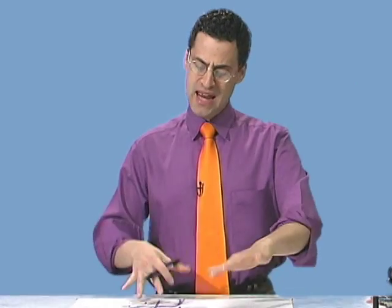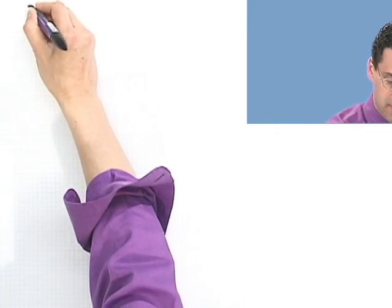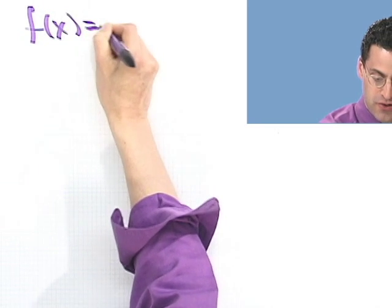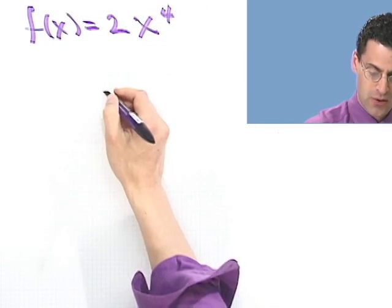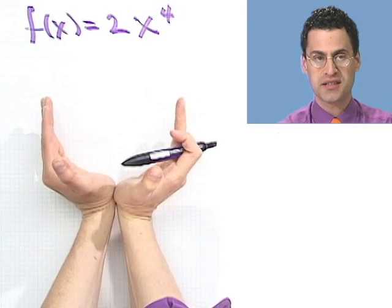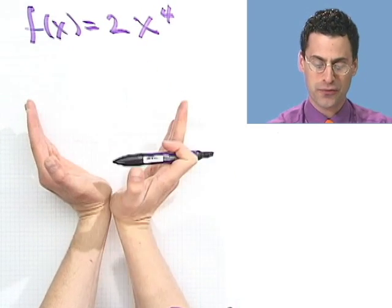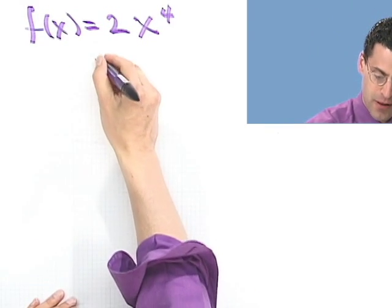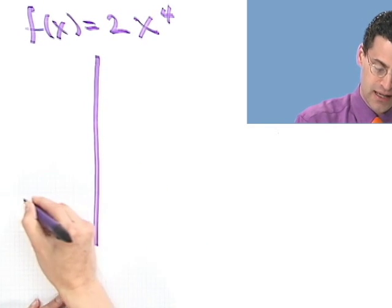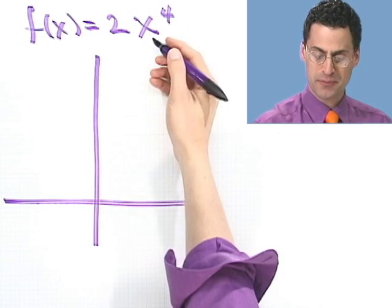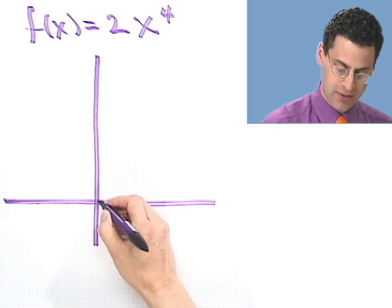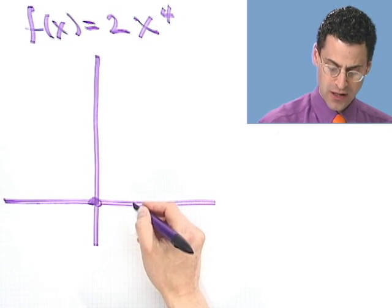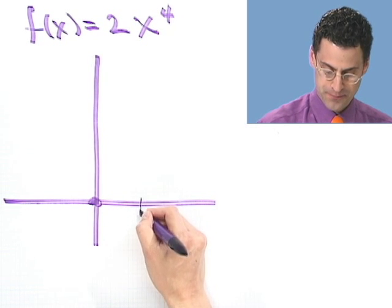Just knowing what these basic shapes look like, you can start to graph all sorts of things. Let's do some simple examples. Let's graph f(x) = 2x to the fourth. I know it's going to be a sitting-up cup shape. The 2 in front makes things tighter. Plugging in 0, we get 0. Plugging in 1, we get 2 — so it climbs really fast.